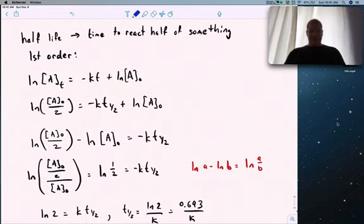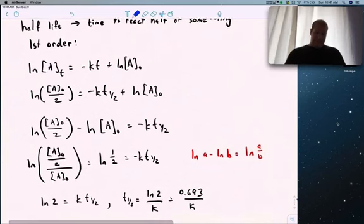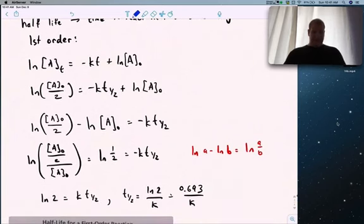Next concept is half-life. Half-life is the time to reach half of something. This is used extensively in nuclear decay. Financing is first order. Let me go through the proof first.